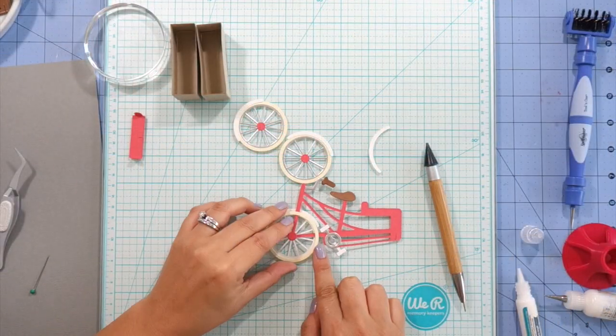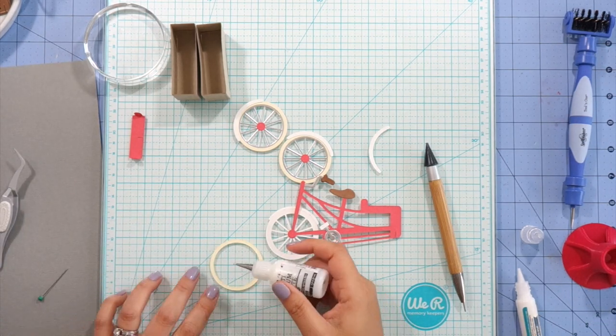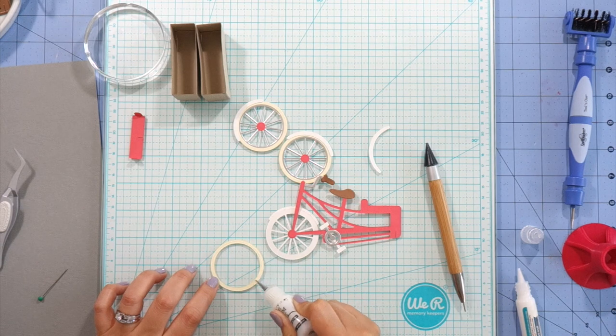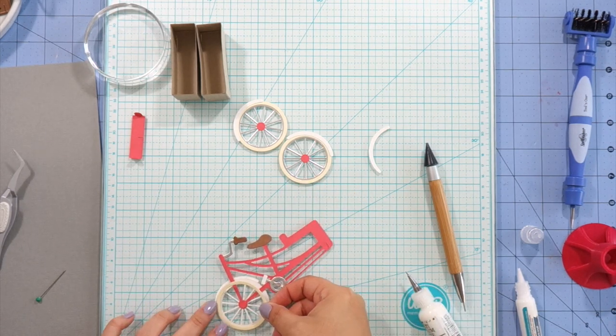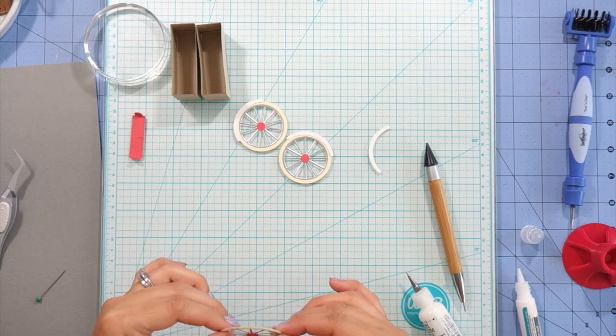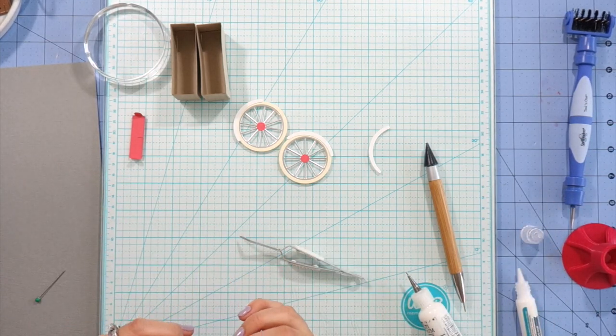I went ahead and cut the fourth fender from white cardstock and I forgot to push record on the camera, but all I've done is glued the front tire on so far. Now I'm going to glue the cream tire piece to the back side of the wheel, and this is why in the beginning we only glued the back side to two of the wheels.